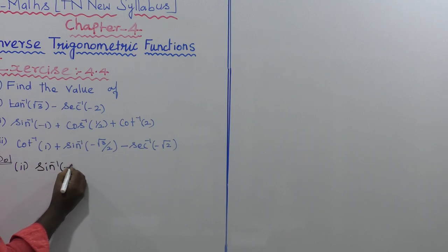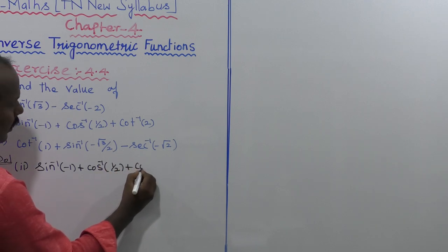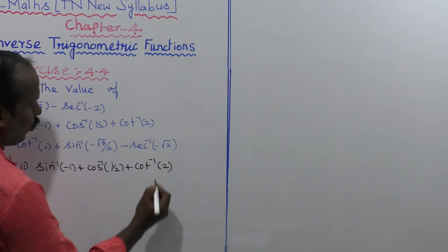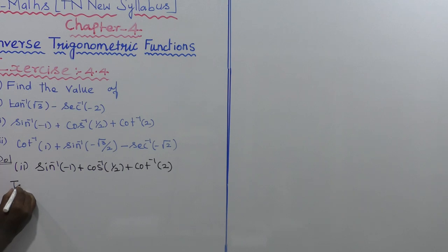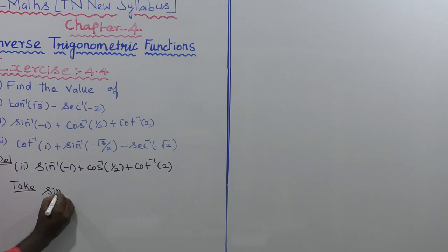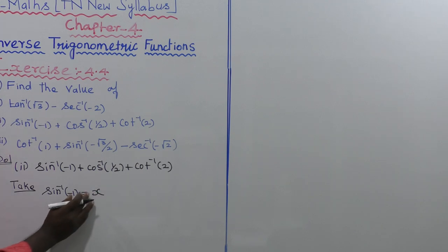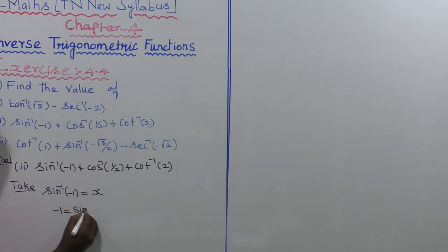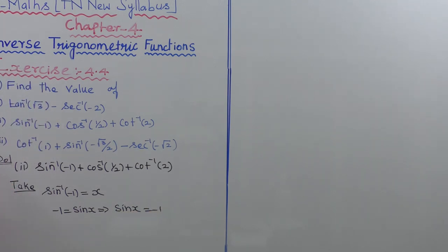Let us solve: sin inverse of minus 1 plus cos inverse of 1 by 2 plus cot inverse of 2. First, take the first term: sin inverse of minus 1. Let sin inverse of minus 1 equal x. Then sin x equals minus 1.